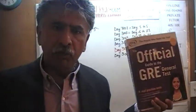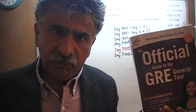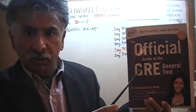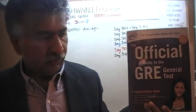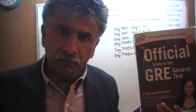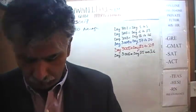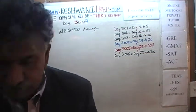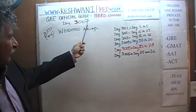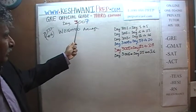We are here because we want to prepare for the GRE. We have been solving math problems out of this book here, the Official Guide to the GRE, the third edition. If you do not own this book already, purchase one immediately — you're going to need it. Today is our lesson number 7, day number 7. This is the third edition, day 7.